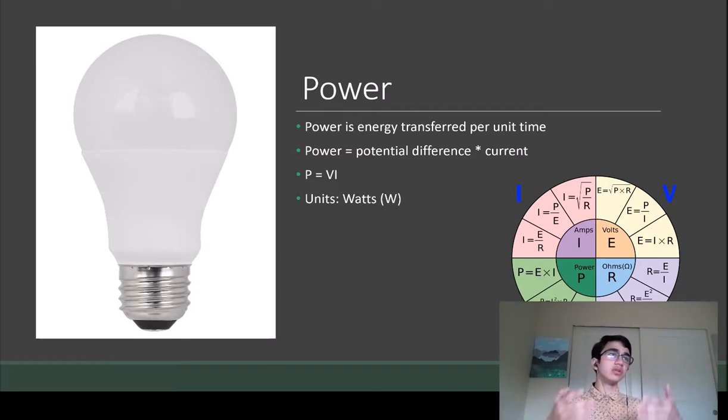If you want to reduce the electricity bill, you want to pick a light bulb that provides a sufficient amount of brightness for you but also doesn't use that much electricity. So lower wattage is better for light bulbs.